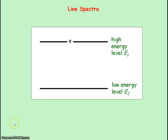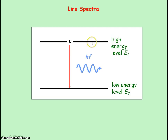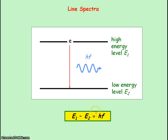When an electron moves from a high energy level to a low energy level, a photon is emitted. The energy of the photon is given by the difference between the energy levels — so the high energy level minus the low energy level equals the energy of the photon emitted.